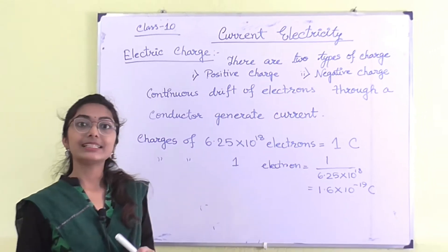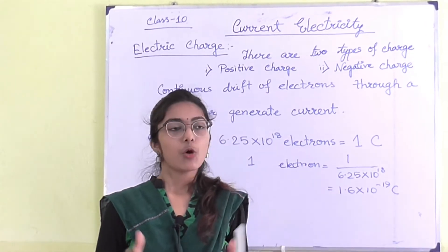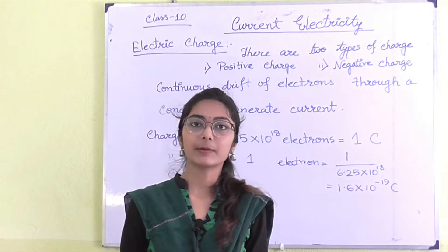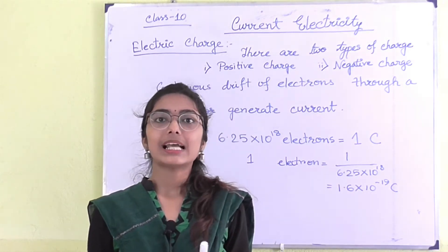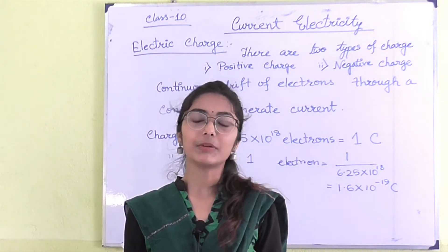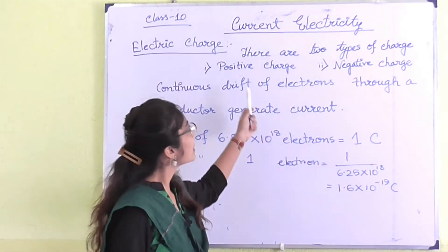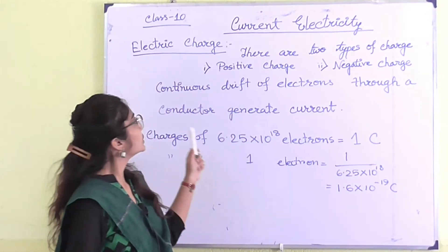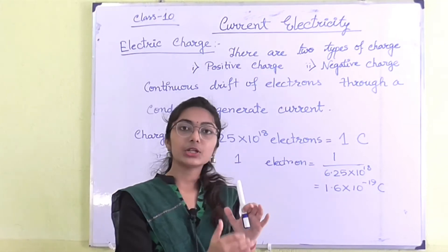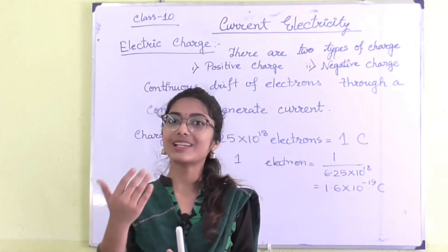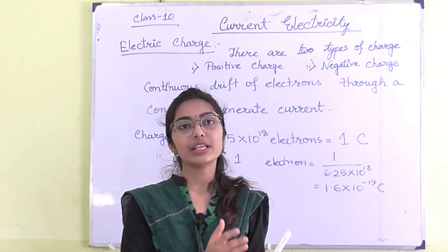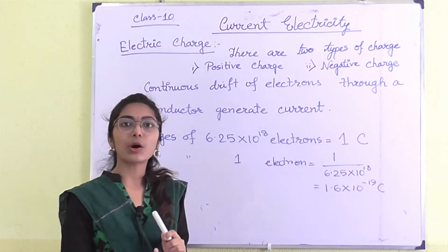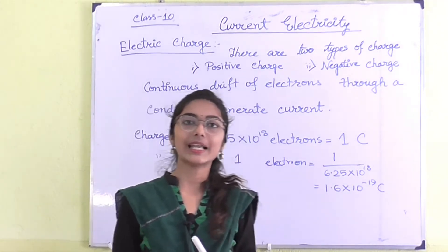Let's start with electric charge. What are electric charges? When two substances are rubbed against each other, electric charges are formed. Suppose rubber and silk — when rubbed against each other, electric charges are formed. There are two types of electric charges: positive charges or protons, and negative charges or electrons. When electrons are moving through a conductor — a conductor is the material in which electricity can pass — continuous drift of electrons through a conductor generates current or electricity.